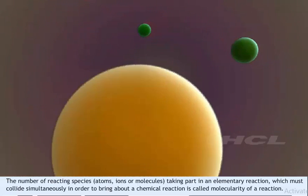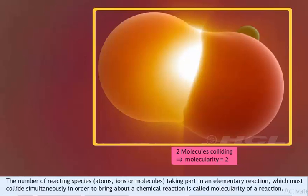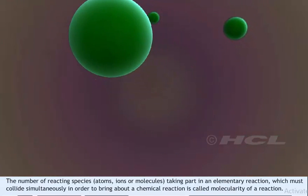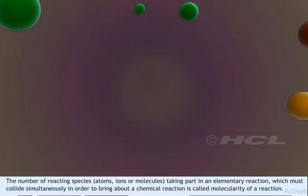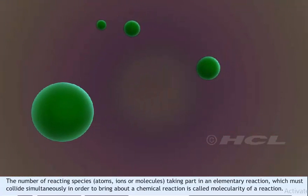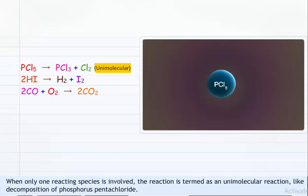One more concept that helps us understand the mechanism of reactions is the molecularity of a reaction. The number of reacting species — atoms, ions, or molecules — taking part in an elementary reaction, which must collide simultaneously in order to bring about a chemical reaction, is called molecularity. When only one reacting species is involved, as in the decomposition of phosphorus pentachloride, the reaction is termed unimolecular.